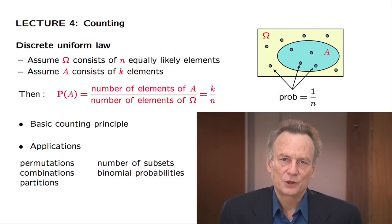Since each one of the elements of A has probability 1 over n, and since A has k distinct elements, then by the additivity axiom, the probability of A is equal to k times 1 over n. Therefore, to find the probability of A, all we have to do is to count the number of elements of omega and the number of elements of A, and so determine the numbers k and n.